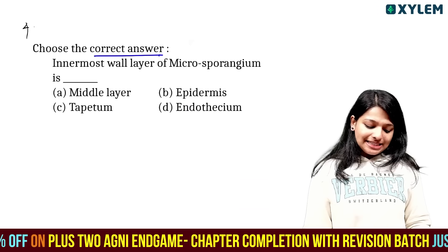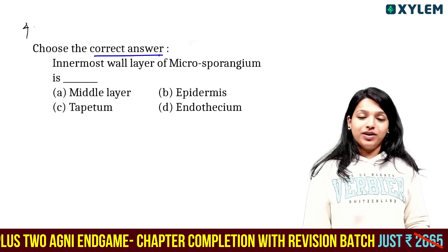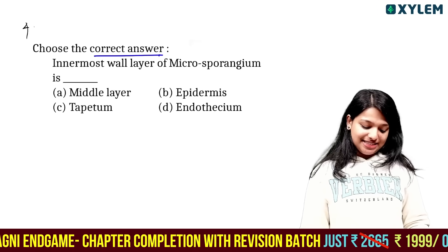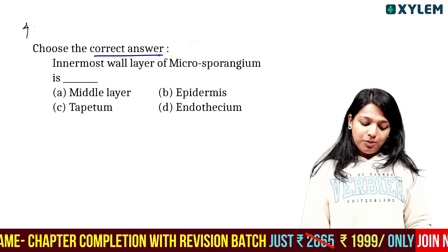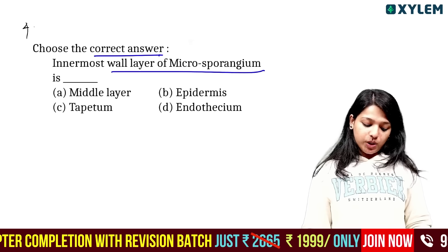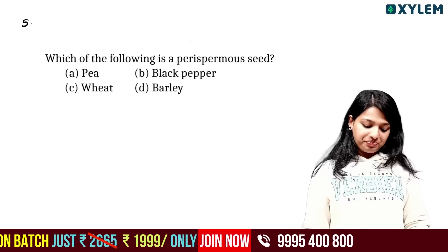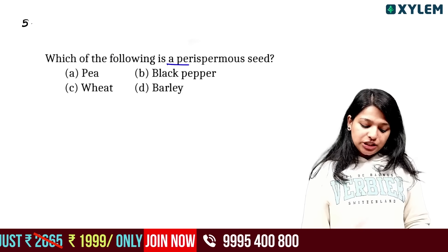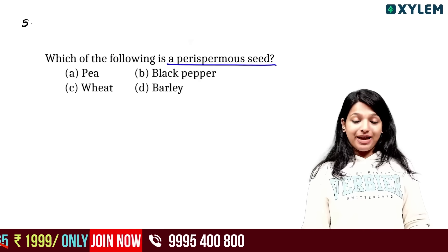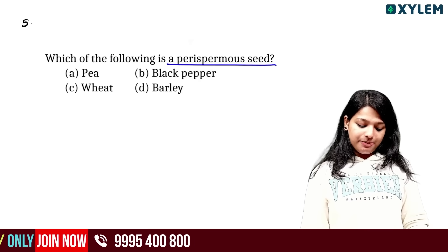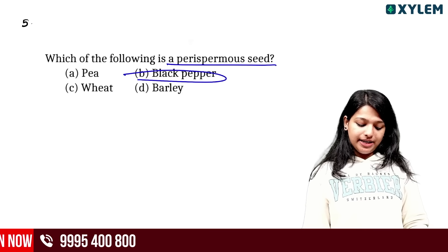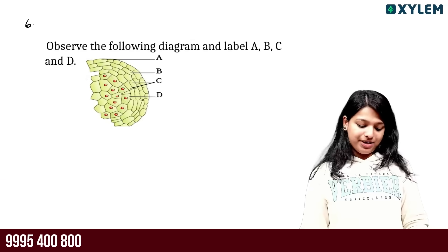Choose the correct answer. The innermost wall layer of microsporangium is tapetum. Which of the following is a perisperm seed? Perisperm seed is black pepper.